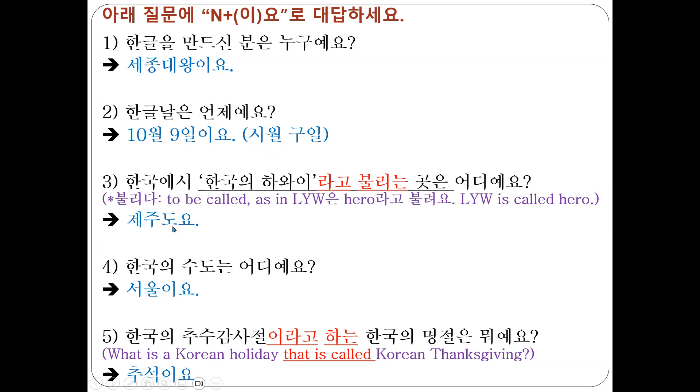자, 제주도요 — ends with a vowel, so 요. 서울이요 — ends with a consonant, so 이요. 추석이요 — ends with a consonant, so 이요. Okay?